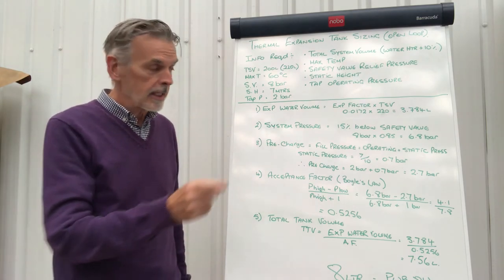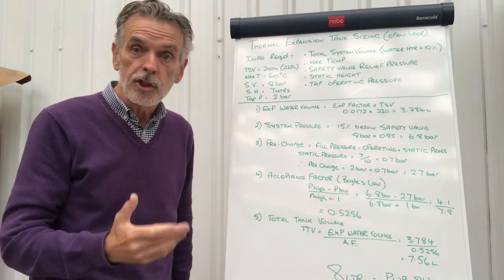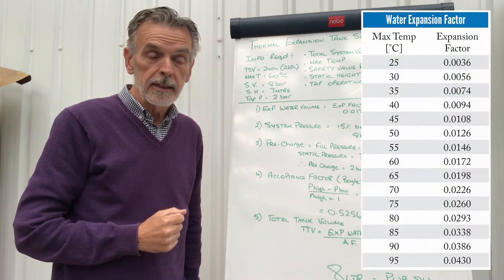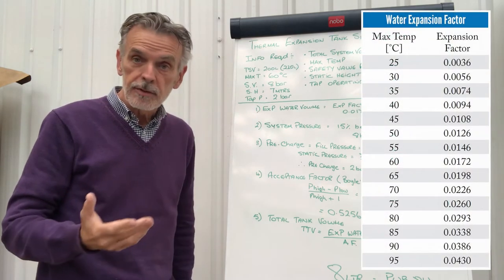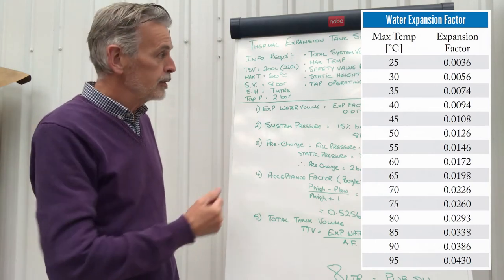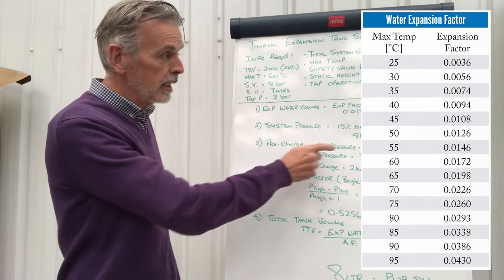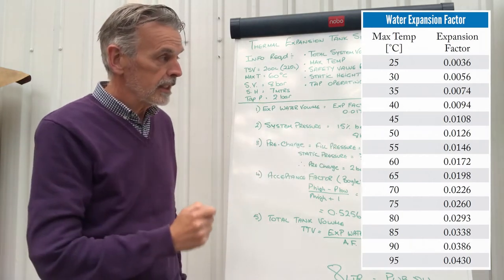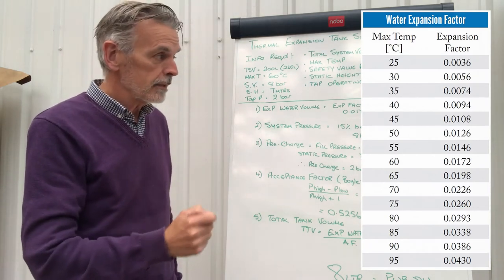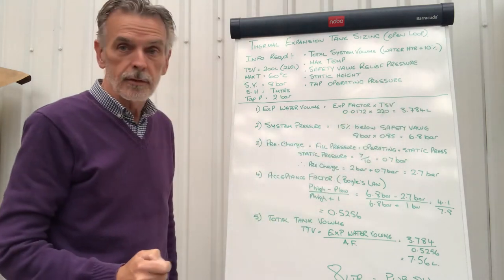First thing that we need to calculate is the expanded water volume, and that's basically a chart lookup table which is here on the screen, which I'll leave there for a few seconds while you look at it. But basically you look down the chart, you look at the temperature that you're storing the water at, which is now at 60 degrees, and you can see that the value is 0.0172. So 0.0172 times 220 litres is equal to 3.784 litres.